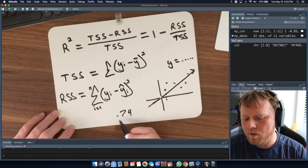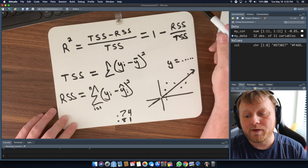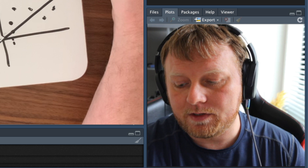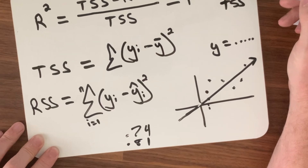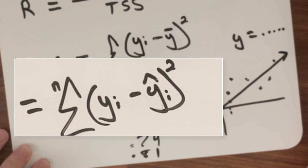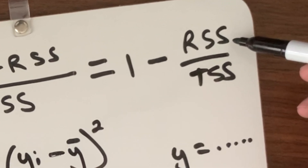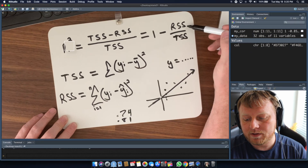Let me clarify something. As RSS gets a better prediction — in other words, if your Y-hat value is closer to your Y-i value — then that difference is going to be smaller and smaller. And if that number is smaller and smaller, look at the ratio between RSS and TSS. As RSS gets smaller, that fraction becomes a smaller decimal, so you're subtracting 1 minus that smaller decimal, which gives you a higher R-squared ultimately. Hope that makes sense.